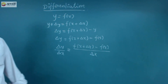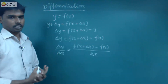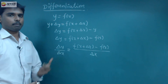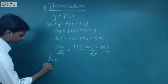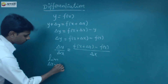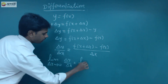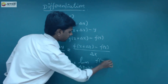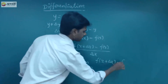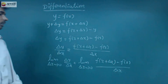delta x is a very small quantity, so in the very small quantity it converges to 0. How will it be changed by 0? Delta x tends to 0, that is: delta y by delta x equals the limit as delta x tends to 0 of f of x plus delta x minus f of x, divided by delta x. This is differentiation.